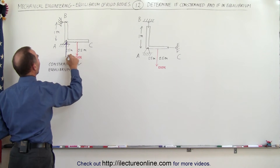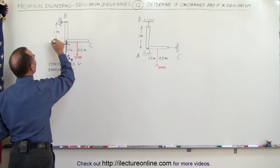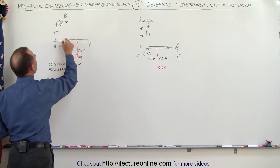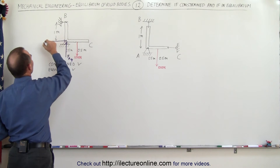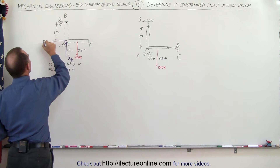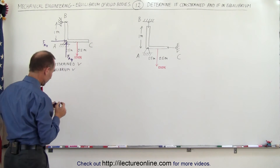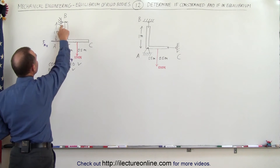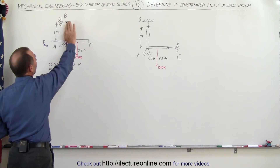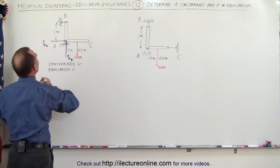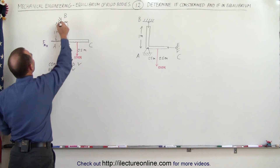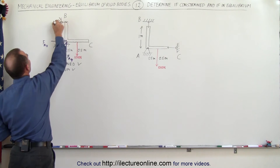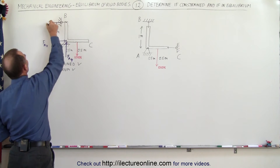There's also going to be a force F at A in the x direction. Likewise, at B — since if the cable wasn't there the whole thing would rotate — we can assume the cable is pulling back, so we have F at B in the x direction.